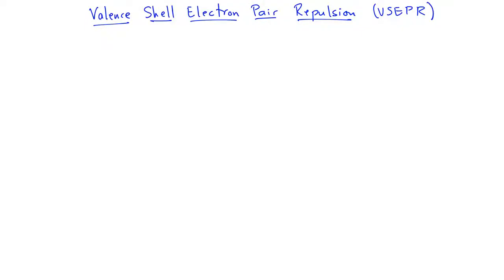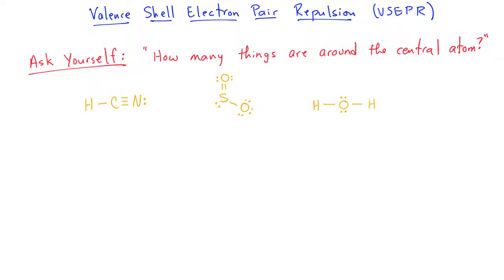The next step to understanding whether or not a molecule is polar or non-polar is to understand everything we can about the molecule's shape. To do that, we use a technique called valence shell electron pair repulsion, or VSEPR. The easiest way to start with VSEPR is to ask yourself how many things are located around the central atom. Things can include electron pairs as well as bonded atoms. In the case of HCN, if we look at the central atom, we see that there are two things bonded to that central atom: the hydrogen and the nitrogen. So that would count as two things.